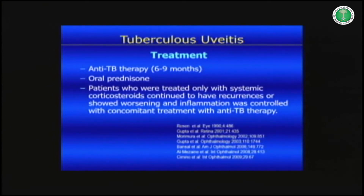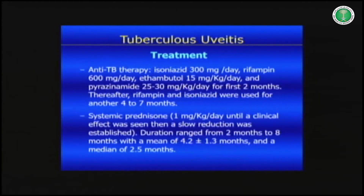The treatment of presumed tuberculosis uveitis requires anti-tuberculous treatment for nine months combined with a short course of systemic corticosteroids. Studies show that patients treated only with systemic corticosteroids continued to have recurrences or showed worsening. We start with four drugs — isoniazid, ethambutol, pyrazinamide, and rifampicin — for two months, then stop ethambutol and pyrazinamide and continue with INH and rifampicin for another seven months. Systemic prednisolone is started at 1 mg/kg body weight and tapered; mean duration of systemic corticosteroid use is four months.